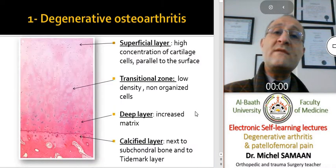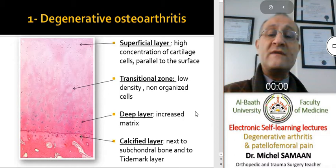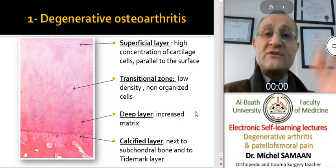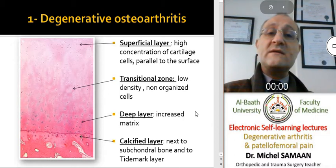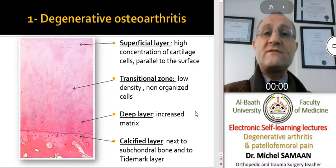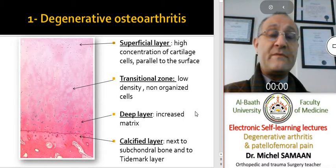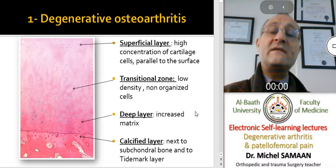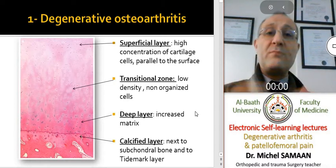we can see that hyaline cartilage is composed of many layers. We begin with the most superficial layer, which contains a high concentration of chondrocytes that are parallel to the surface of the joint. This layer is responsible for the smooth gliding of the opposed cartilage layers.